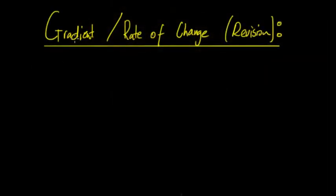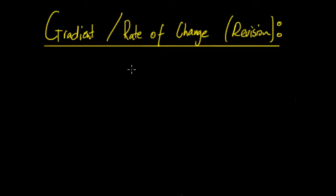In this video we'll be looking at the gradient and rate of change. This should be mainly revision — going over what a gradient is, what rate of change is, and then leading on to differentiation, which allows you to calculate the gradient and a gradient function from another function. A rate of change is the change of one variable with regards to another.